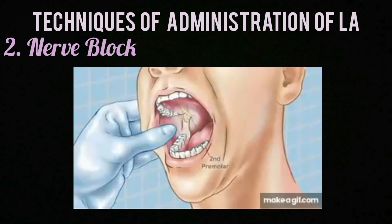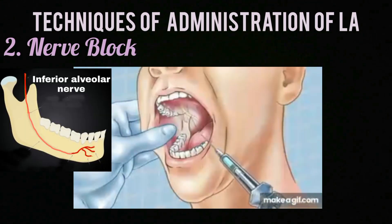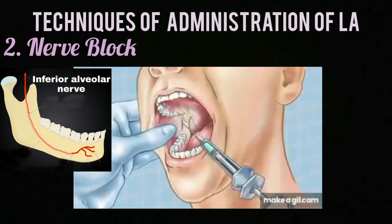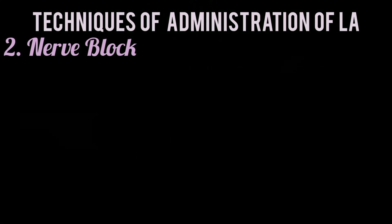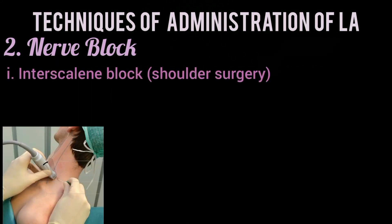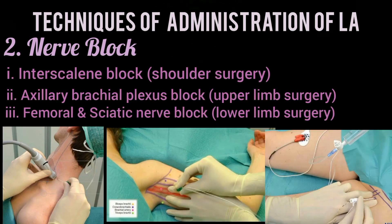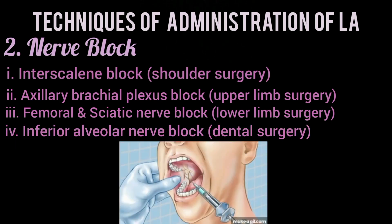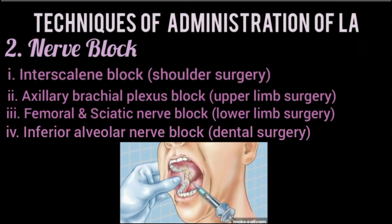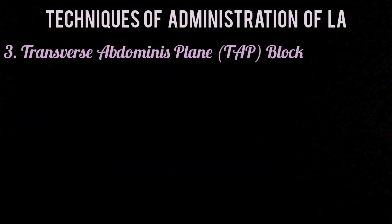Next is nerve block, in which the local anesthetic injection is given as close to the nerve as possible so that the area innervated by the nerve is anesthetized. Available procedures include interscalene block for shoulder surgery, axillary brachial plexus block for upper limb surgery, femoral and sciatic nerve block for lower limb surgery, and inferior alveolar nerve block for dental surgery.